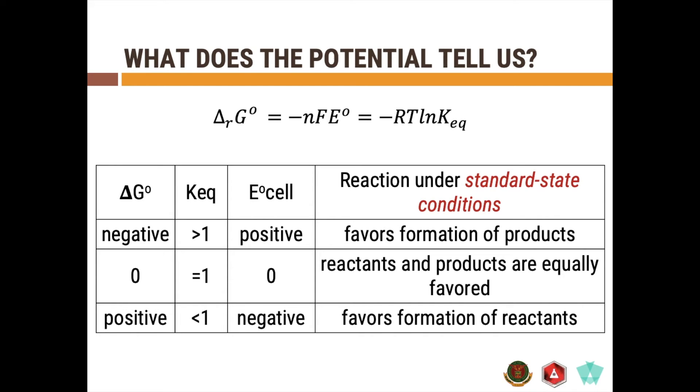Now, if your Ecell turns out to be 0, that means that your delta G is also equal to 0 and that Keq value is equal to 1, then you can say that the reaction is at equilibrium and you have the equal favoring of the formation of the reactant and the product.